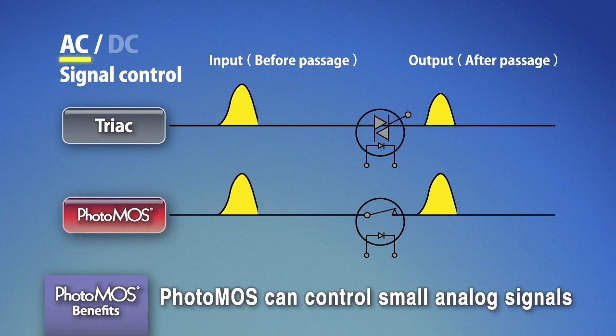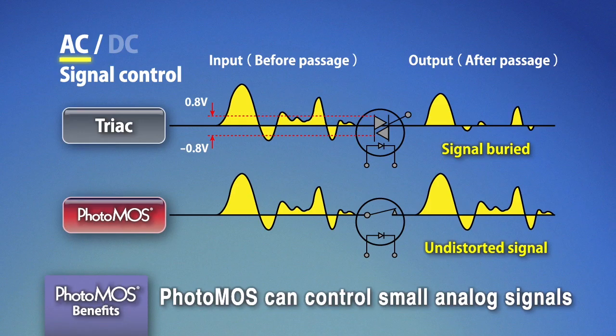For example, when a TRIAC controls an AC signal, the signals of on-voltage less than 0.8 volts get buried.